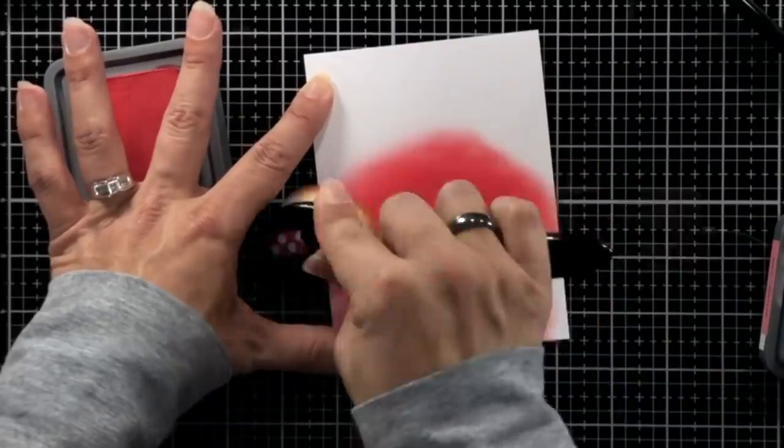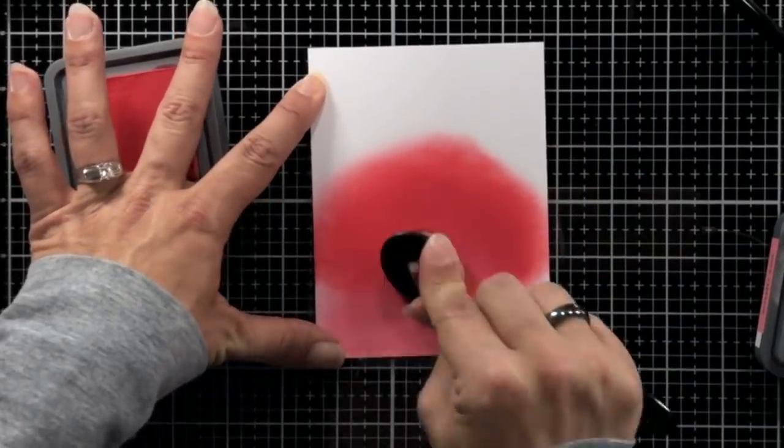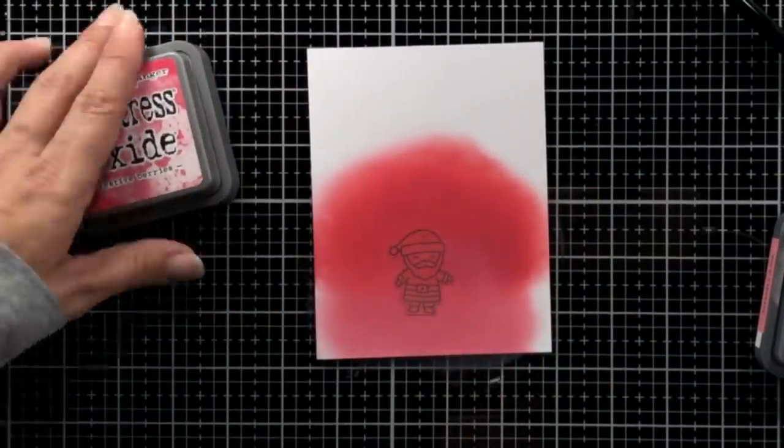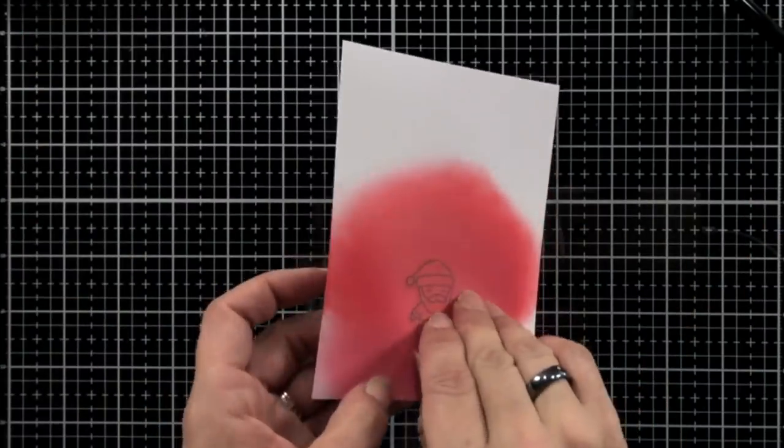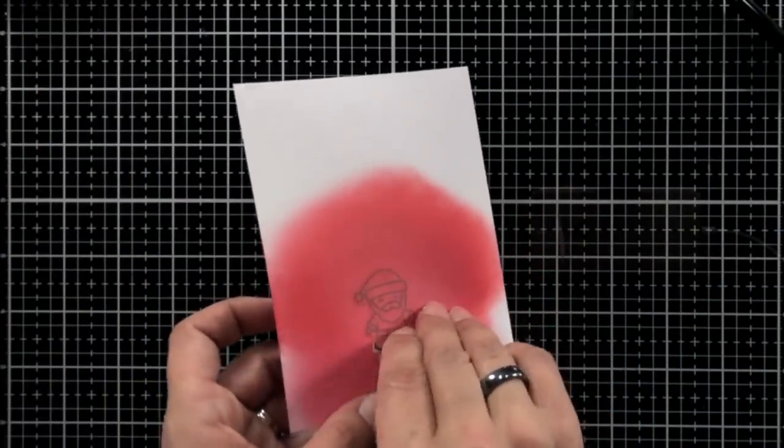Once my ink blending is done and I remove the mask, I'm going to start Copic coloring my Santa image. And I am going to use the same colors that I did on the Mrs. Claus. I love removing that mask and I love that white edge. It just really works with the rest of my card.